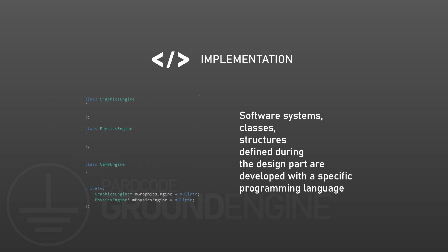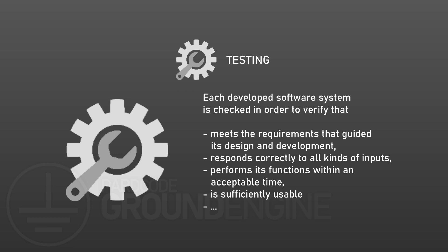When the software project is in a good stage of development, or even part of it, the testing part comes into the game. In this step, the software is tested in order to verify the overall quality. In general, each developed software system or component is checked in order to verify that it meets the requirements that guided its design and development, responds correctly to all kinds of inputs, performs its functions within an acceptable time, is sufficiently usable, and so on.